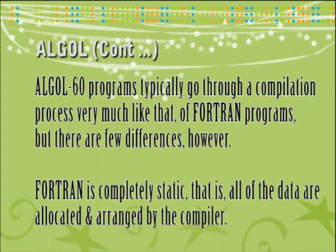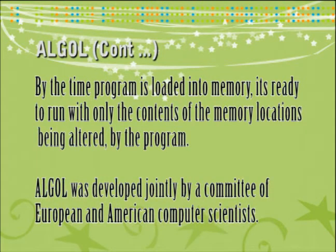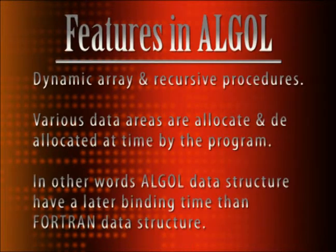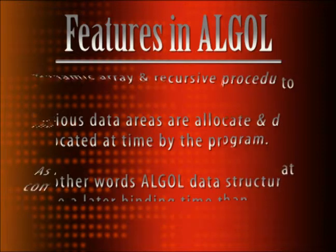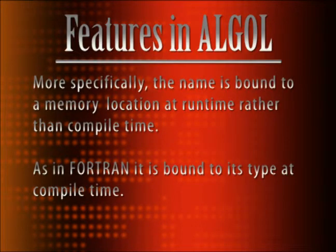ALGOL's compilation process is very much like that of Fortran programs, but there are a few differences. Fortran is completely static — all data are allocated and arranged by the compiler, and by the time the program is loaded into memory it is ready to run with only the content of memory locations being altered. ALGOL features dynamic arrays and recursive procedures; various data areas are allocated and de-allocated at runtime. ALGOL data structures have a later binding time than Fortran data structures — names are bound to memory locations at runtime rather than compile time, though they are bound to their type at compile time.